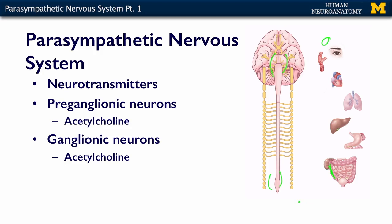In the next section, we'll talk about the specific nerves from the brainstem — the cranial nerves — and the pelvic splanchnic nerves that go out to the targets. So the next section, we'll talk more about the parasympathetics.